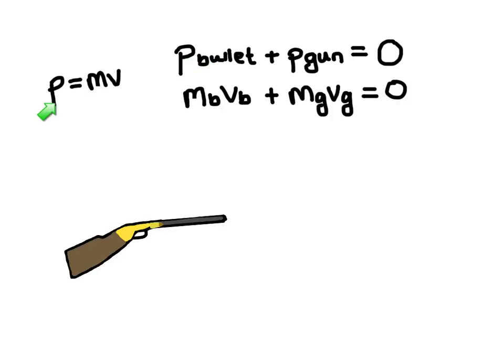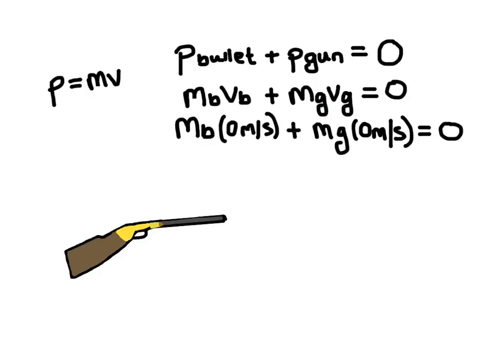I know that P, momentum, is equal to M times V. So I've taken the momentum of the bullet and I've expanded it to include the mass and the velocity. I've just indicated that this is referring to the bullet with the subscript B, and then I have mass and velocity of the gun over here. And so when I plug in the numbers here, zero velocity and zero velocity, we of course get zero momentum total.